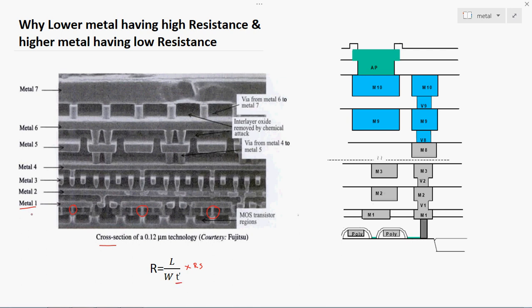In lower metals, if the thickness is reduced, resistance will increase because thickness is directly proportional in the denominator. If W is increased, resistance decreases. If T decreases, resistivity increases. If length is increased, resistance also increases. So if W and T are decreased, resistance will increase.